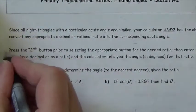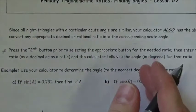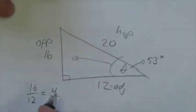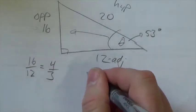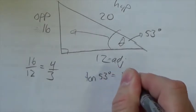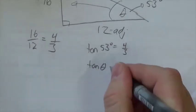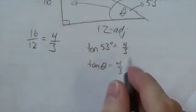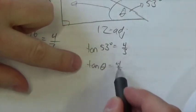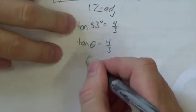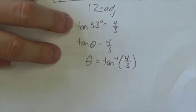To do that, you press the second button prior to selecting the appropriate trig function. In this particular question, when I went opposite over adjacent, that was the tan ratio. We know that the tan of 53 degrees is 4 thirds. But let's say I don't know the angle — the tangent of theta equals 4 thirds, but I know the ratio. I can use the inverse of tangent on the 4 thirds, and that would give me the angle that I'm looking for.